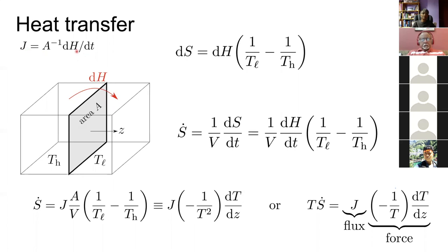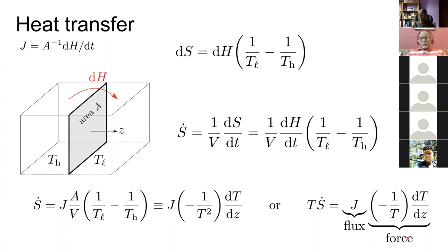Substituting for dS, the rate of entropy production equals a flux times a force, where the flux is dH/dt per unit area, and the force is (1/T_L − 1/T_H). If we make the temperature differences small enough, this becomes the flux times −(1/T²)(dT/dz), where z is the coordinate in that direction. Therefore, the temperature times the rate of entropy production gives us the heat flux, and this is the correctly expressed force driving the heat flux.